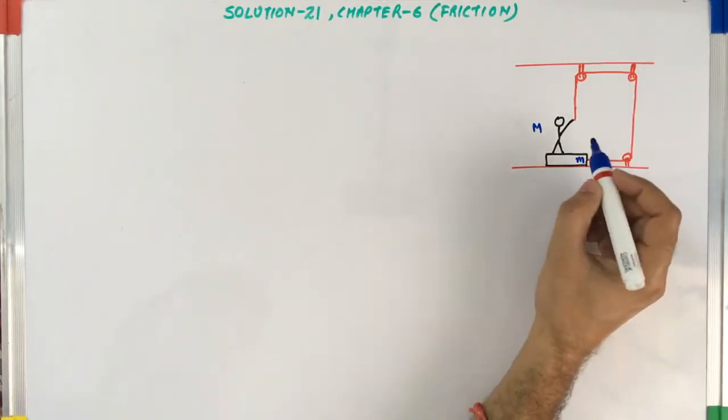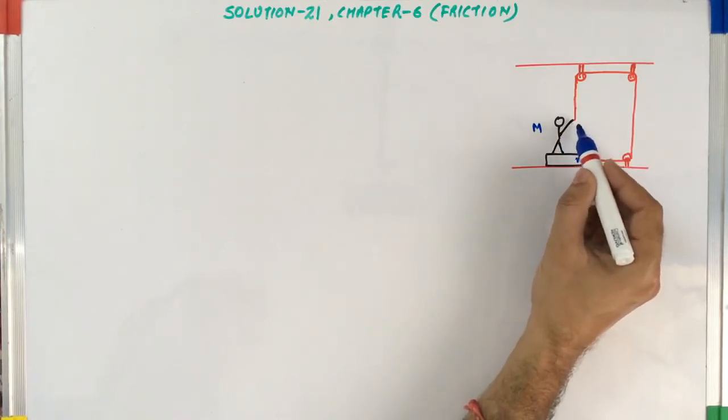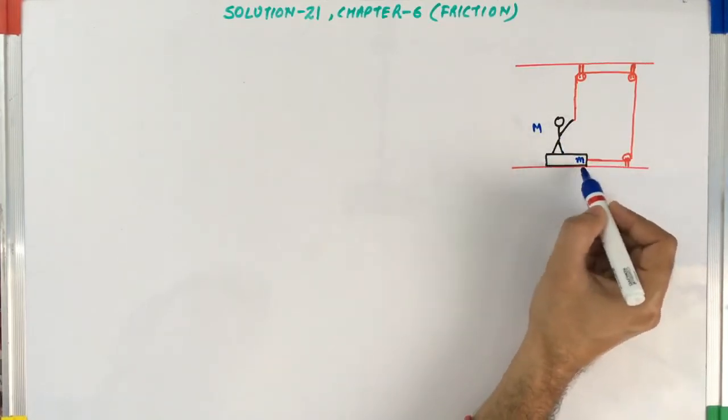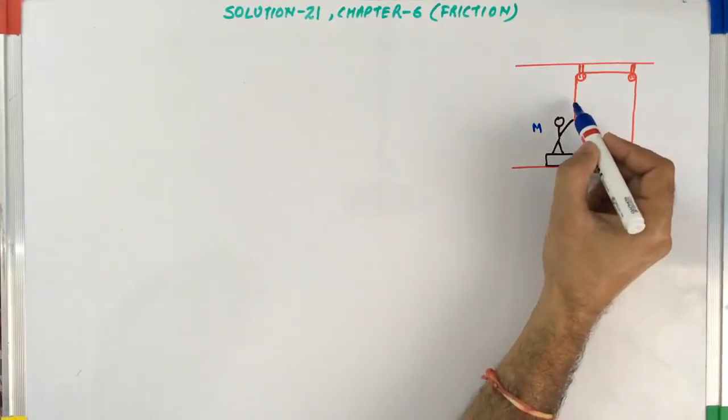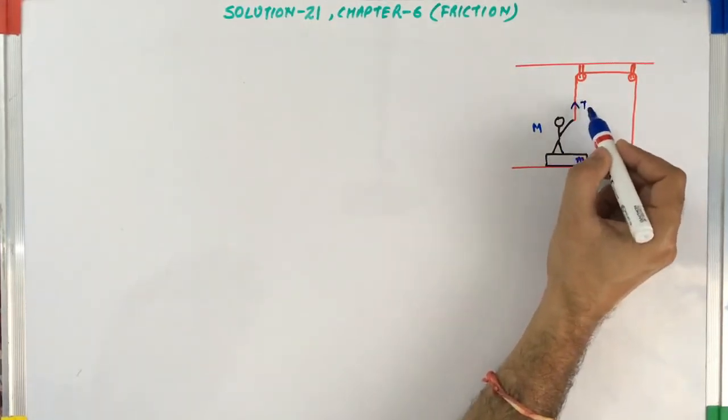We have to find the maximum force that this man can apply on this rope so that this block will not move in the right hand direction. So let's say this man is applying a tension T in this rope.